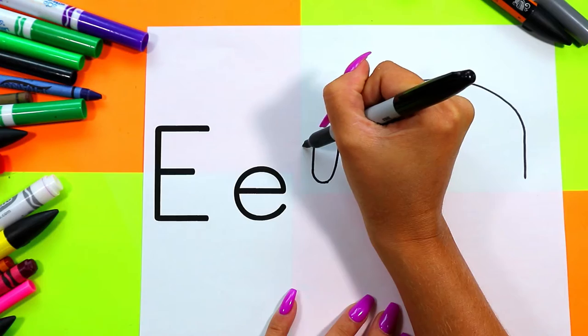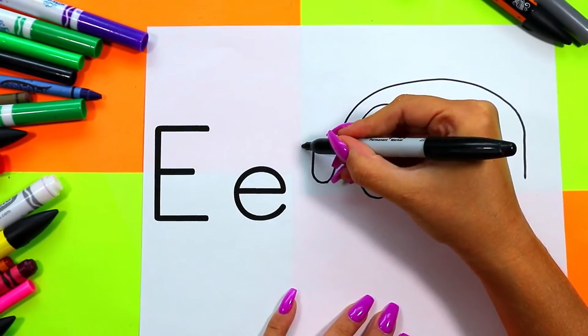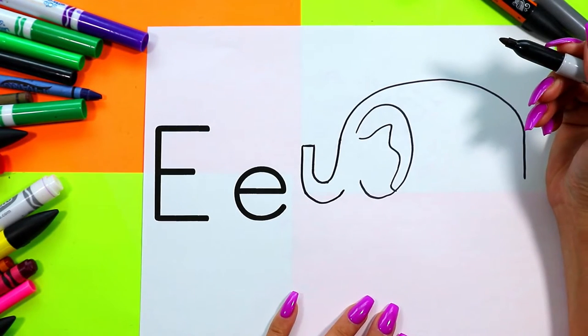Draw one line across, and then we're going to draw a line down and up to finish elephant's trunk.